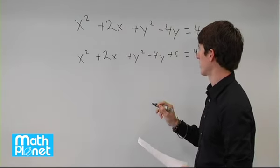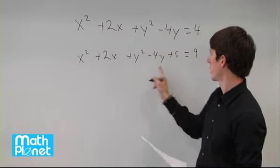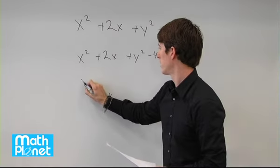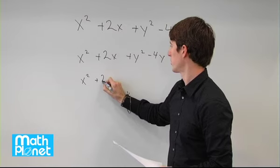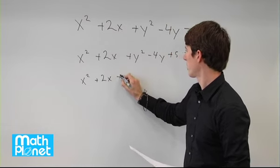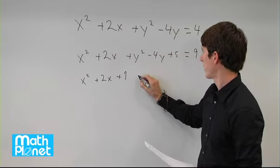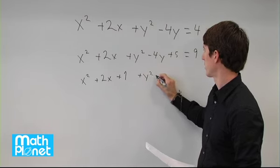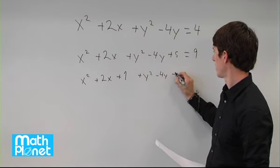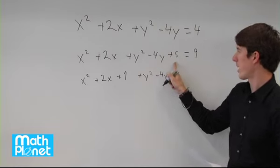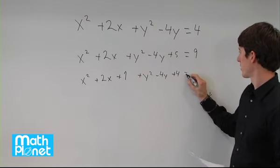Then we can in fact write these as two perfect squares. We'll put 1 here and leave 4 here. So x squared plus 2x plus 1 and then we have plus y squared minus 4y plus 4. So this 5 is split into 4 and 1. This still equals 9.